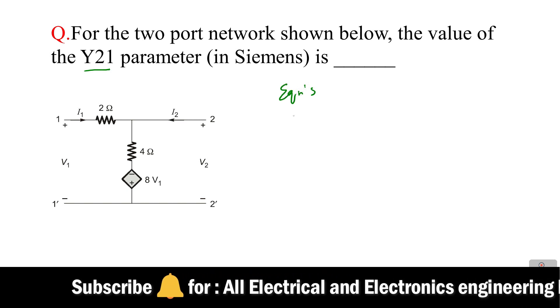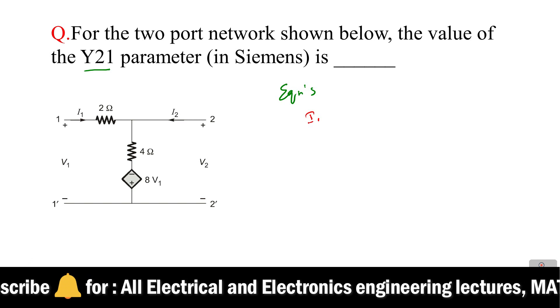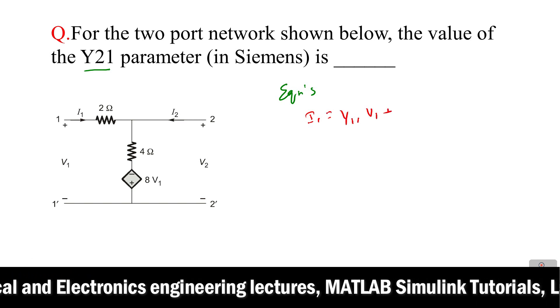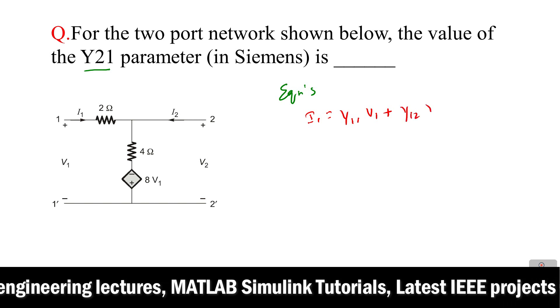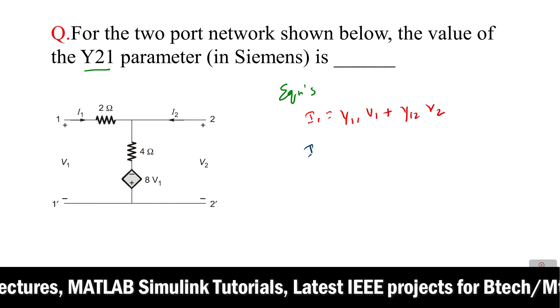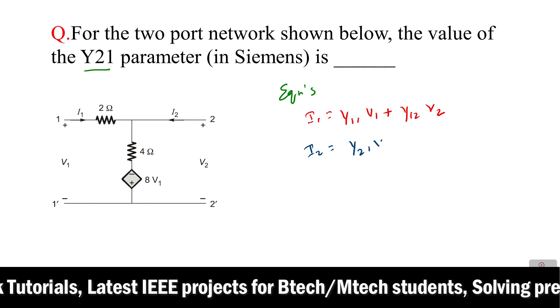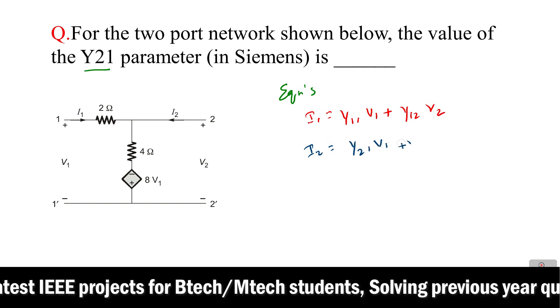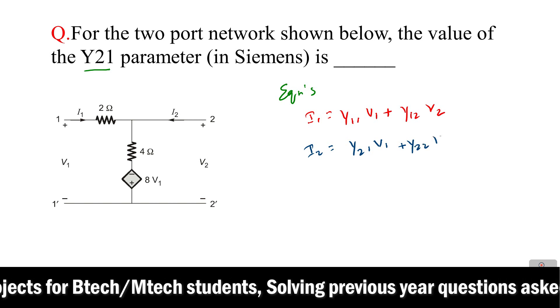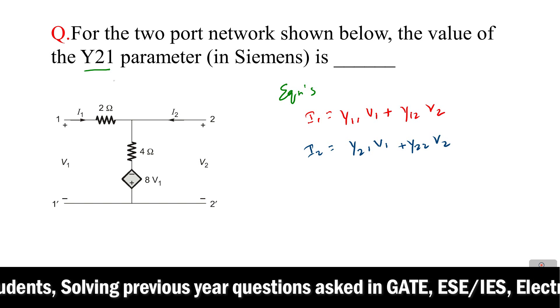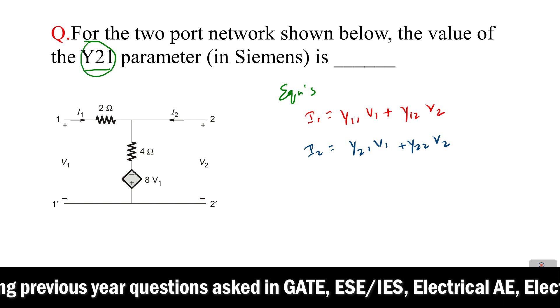i1 equals Y11 v1 plus Y12 v2, and i2 equals Y21 v1 plus Y22 v2. Here in the question they are asking to find Y21, right? So we need to find out the Y21.